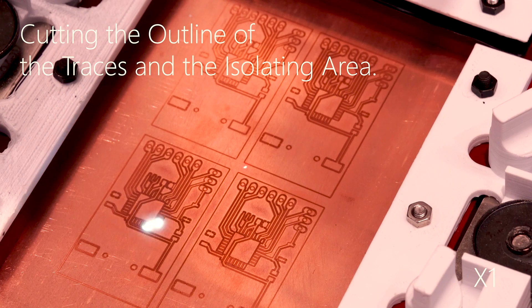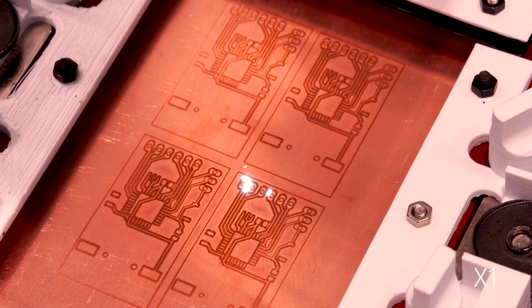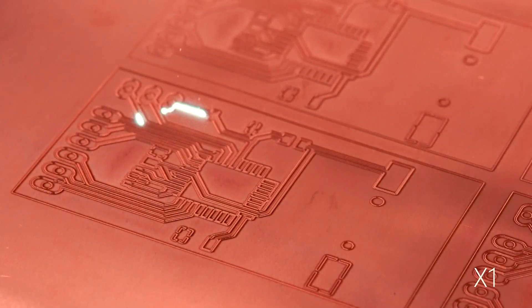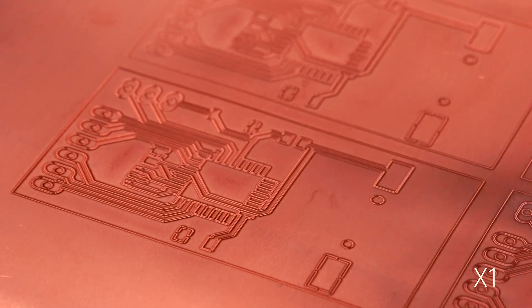To generate the circuit, the conductive trace outline is engraved with the laser power calibrated to only cut through the copper sheet but not the Kapton tape.